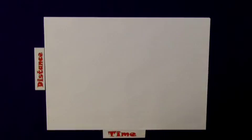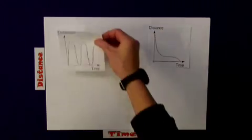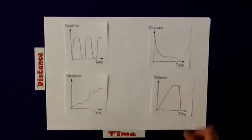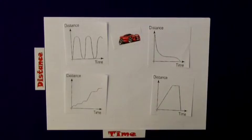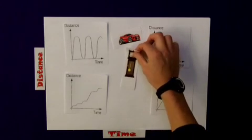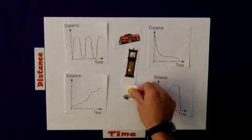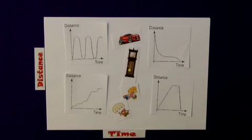Time for you to have a go. I've got four time-distance graphs here which I'd like you to match with four different activities: a car in a traffic jam, the movement of a pendulum on a grandfather clock, a lady going shopping, and somebody doing a parachute jump. Pause the clip and try to match the activities to the graphs.